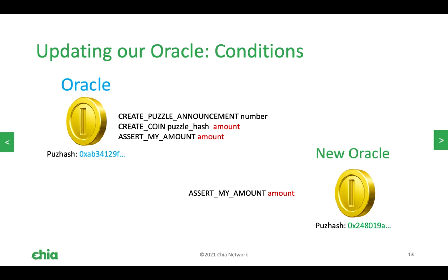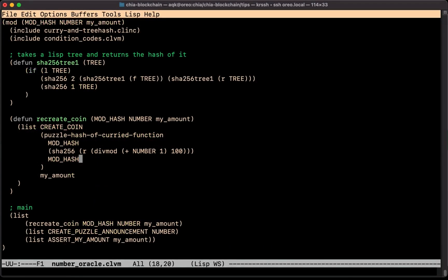We can do that fairly easily by chaining transactions together. This slide represents a state change in the oracle. If an oracle always published the same information it wouldn't be very useful, so to create a usable one we have to change the information coming out of the oracle. In Chialisp that means creating an entirely new puzzle, because puzzles are attached one-to-one with coins — you need to spend a coin to make a new puzzle or change the information contained in that puzzle.